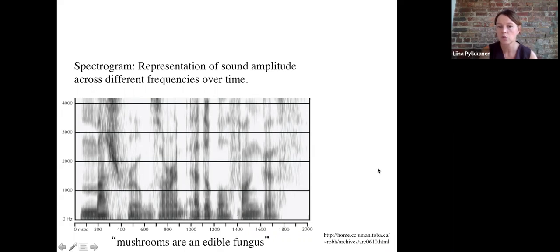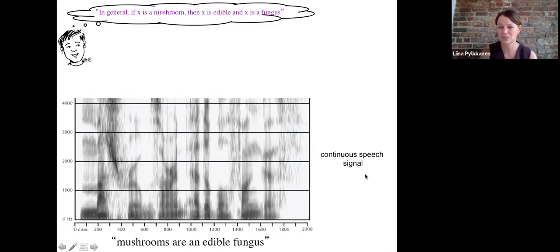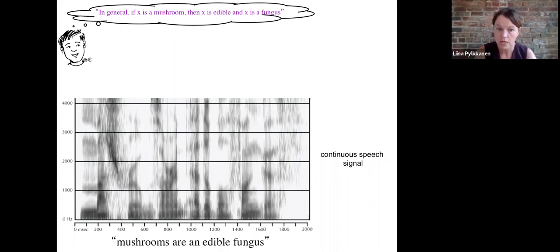And so, somehow from this raw signal, we extract a rather complicated meaning. In this particular case, this continuous speech signal, completely automatically, very effortlessly in your brain, gets mapped onto meaning that something like: in general, if something is a mushroom, then that thing is edible and the thing is a fungus. So it's kind of miraculous that your brain manages to do this so effortlessly. So what are the various steps that your brain must do in order to get from this raw continuous speech signal to this type of complex propositional representation?